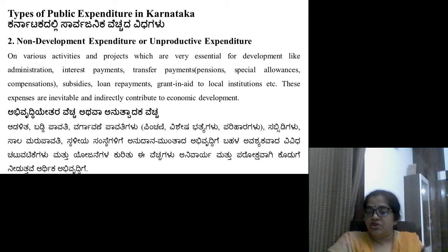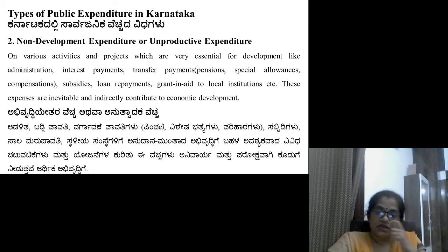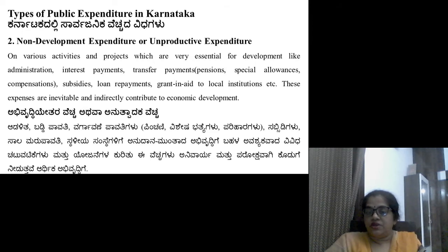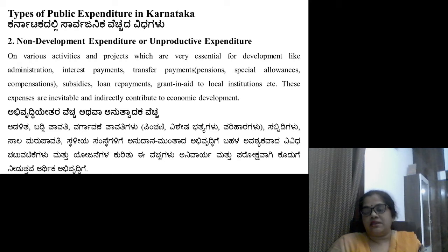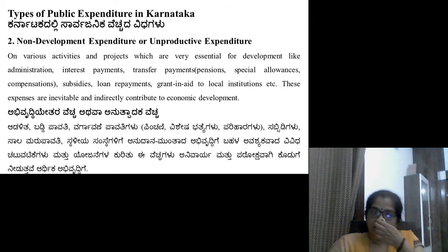Transfer payments are payments you receive without earning for them directly. Then subsidies — for example, if the farmer is undergoing a loss or if some small scale industry is undergoing a loss, the government goes forward and gives subsidies. Loan repayment is also one such item — if the government has taken a loan, the repayment is necessary. And grants and aid to local institutions are also part of non-developmental expenditure.